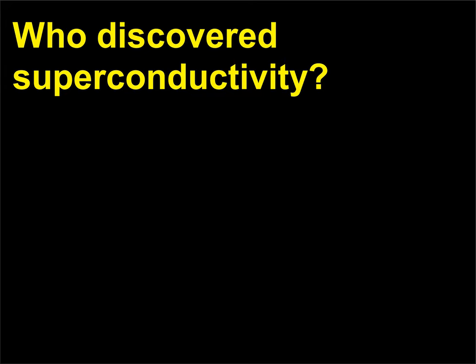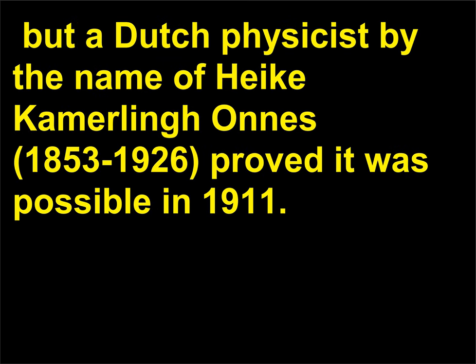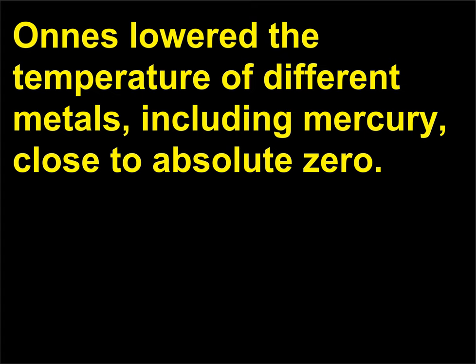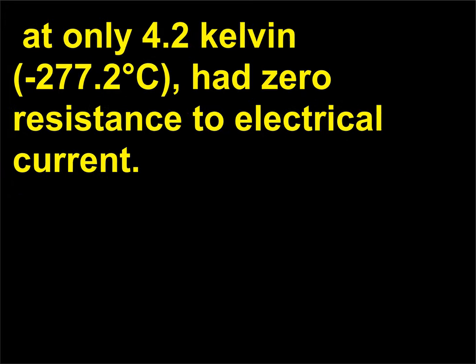Who discovered superconductivity? The creation of materials without resistance was thought to be impossible, but Dutch physicist Heike Kamerlingh Onnes (1853–1926) proved it was possible in 1911. Onnes lowered the temperature of different metals, including mercury, close to absolute zero. He found that mercury at only 4.2 Kelvin (−269.2 degrees Celsius) had zero resistance to electrical current.